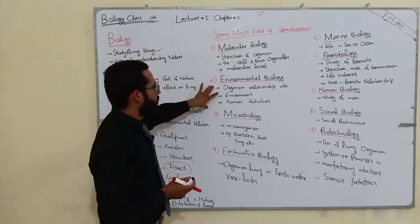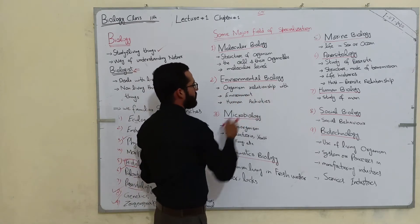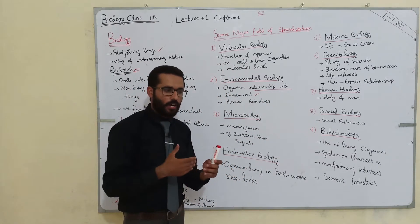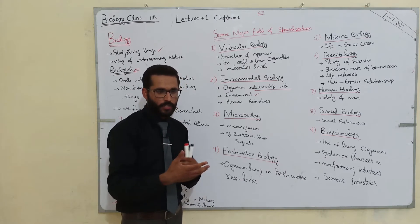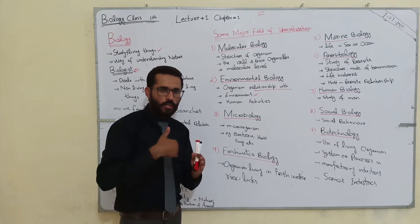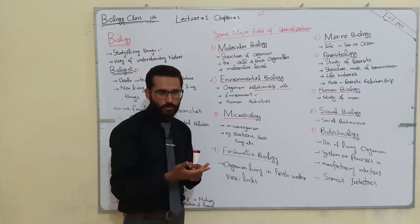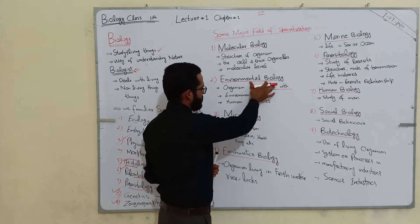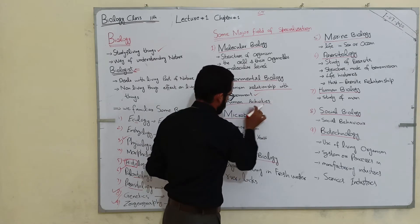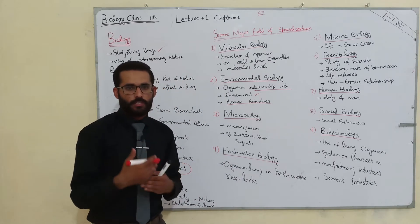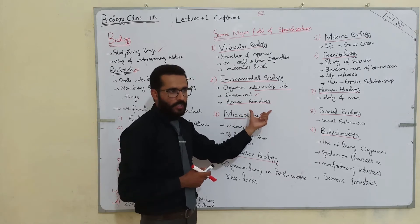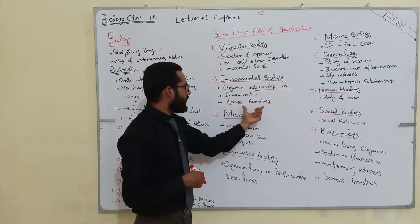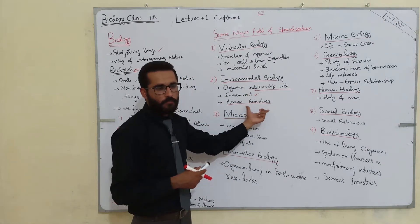Environmental biology deals with the organism's relationship with the environment. It studies how organisms are affected by environmental changes — for example, if the environment is hot, how does the living style change? It also studies how human activities cause environmental change, and how organisms adapt to those changes.